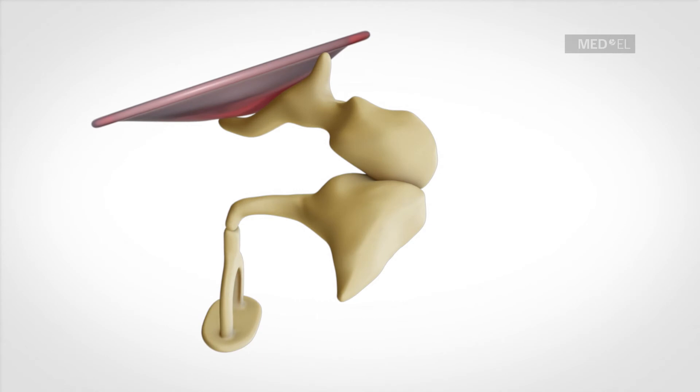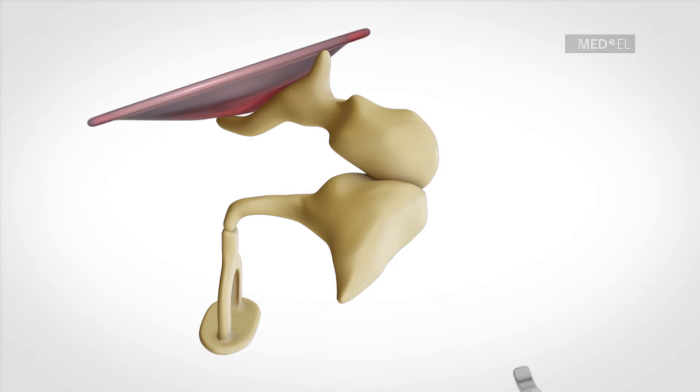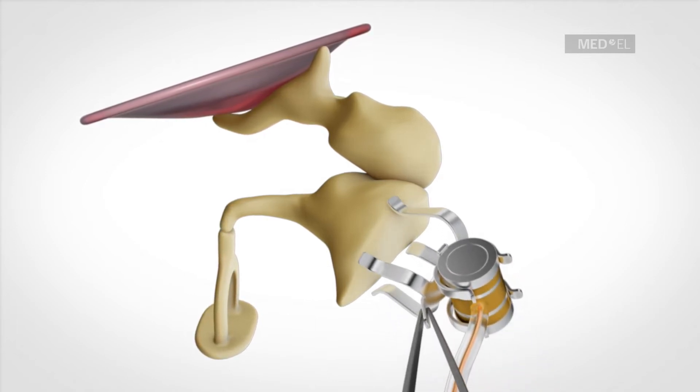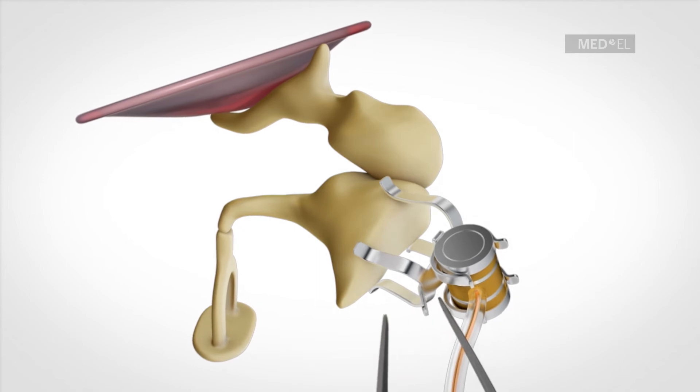The INCUS SP coupler is attached to the short process of the INCUS. It is inserted via a posterior epitimpanotomy, away from the facial nerve and the corda tympani.